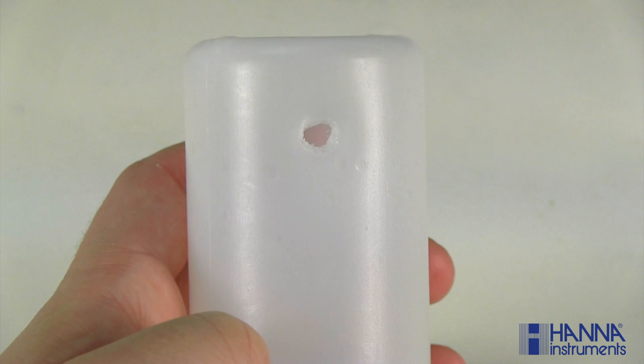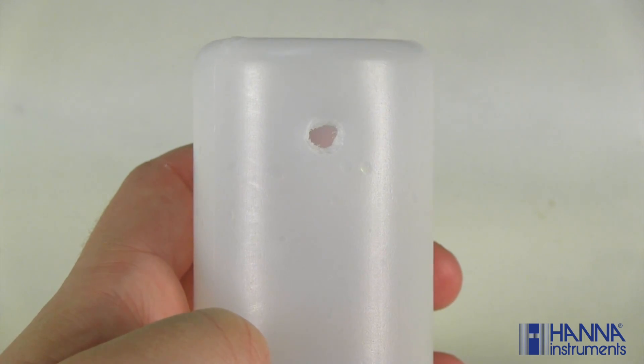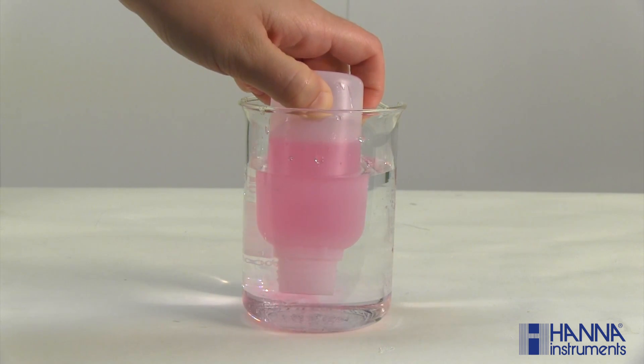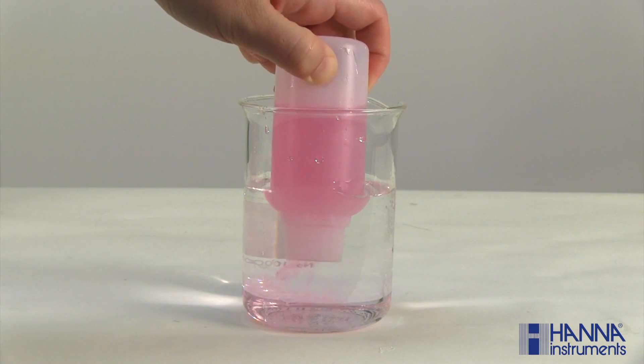This creates head pressure, allowing electrolyte to pass through the junction and into the sample being measured. If the fill hole is closed, the electrolyte will remain inside the chamber.